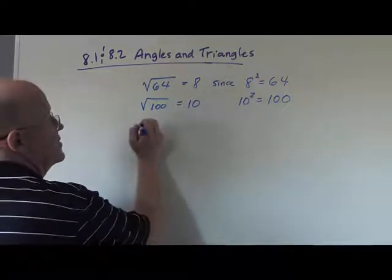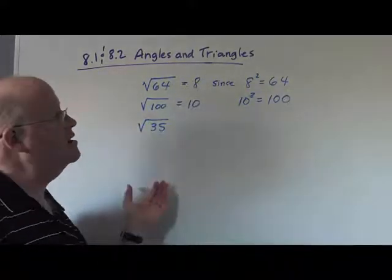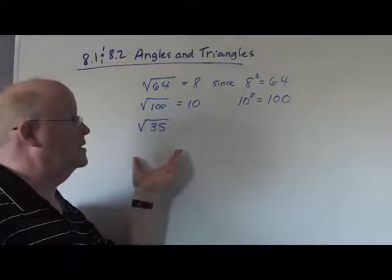If I wanted to find the square root of 35, however, there is no number, no whole number, I should say, which when multiplied by itself makes 35.